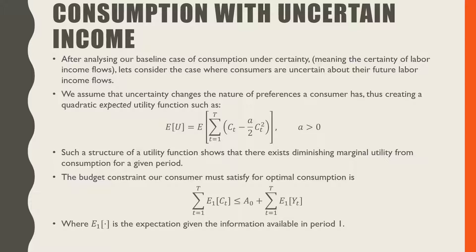We assume that uncertainty changes the nature of the preferences the consumer has, thus creating a quadratic expected utility function, such that the expected lifetime utility is equal to the expectation of the summation of all Ct — consumption at time t — minus a over 2 times Ct raised to the power of 2, where t goes from 1 to capital T, which is our end period, and a is greater than 0. Such a structure of a utility function shows that there exists diminishing marginal utility for consumption for a given period.